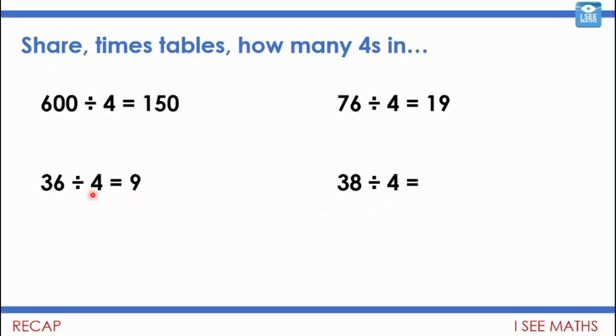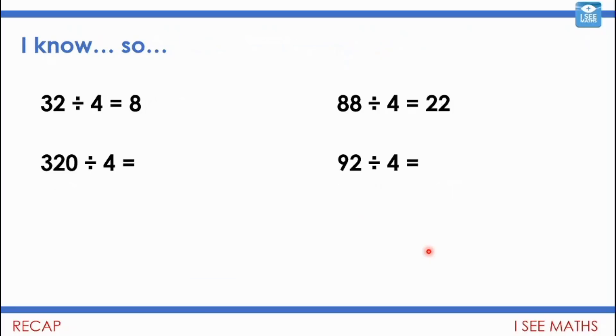Whereas 38 divided by 4, well, that's just, of course, it's 2 more than 36 divided by 4. So the answer, 9 remainder 2. Now, I thought we'd also have a look at some I know and so facts. And see, if I know one calculation, how I can use that to work out another one. So I wonder how you get on with these two? Pause the video and have a quick go. And let's have a look. So 32 divided by 4 is 8. So 320 is 10 more than lots of 32. So that will be 80. And 88 divided by 4 is 22. 92 is 4 more. So the answer there, 23.